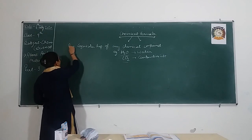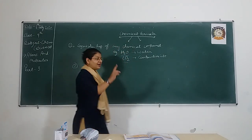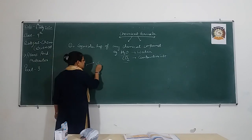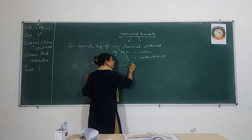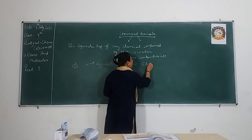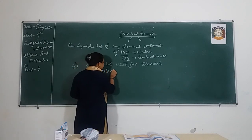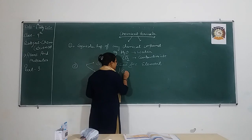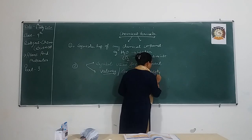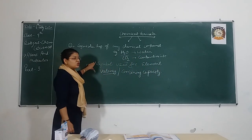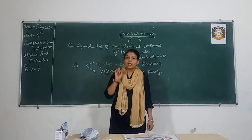The second thing: what are the things you need to know before writing a chemical formula? There are two things. First is the symbol used for the element, and the second thing is your valency — or you can say combining capacity. Just by knowing these two things you will be able to write the chemical formula of any chemical compound.